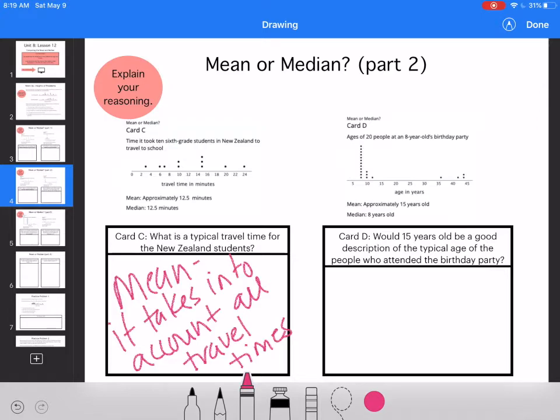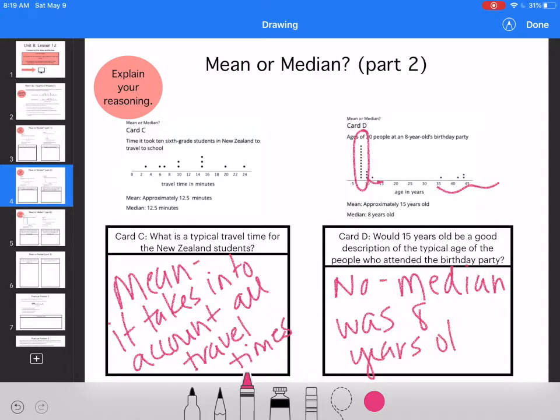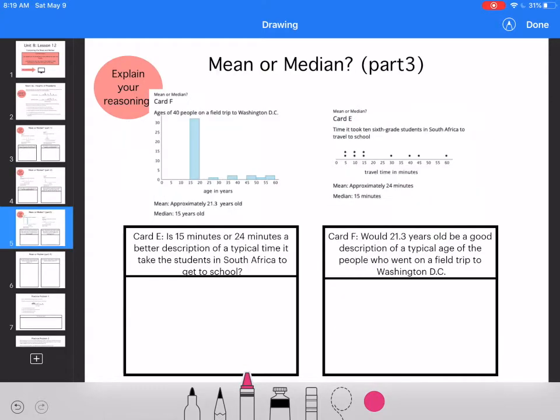Would 15 years old be a good description of the typical age of the people who attended the birthday party? The mean is 15. But if I look at the dot plot, eight seems to be how old the kids were. So I'm guessing these are brothers and sisters, and these would be like parents. So I would say no, the median was eight years old. It would also be the peak in my data.